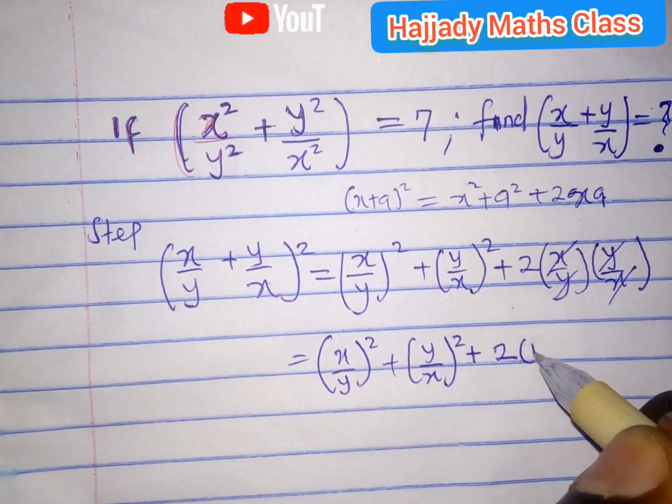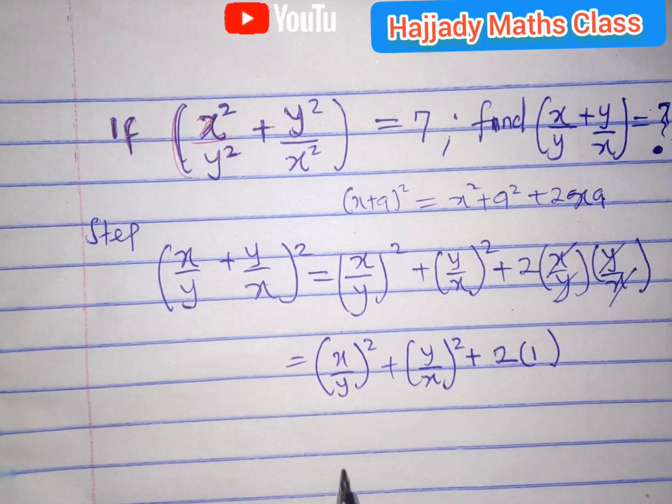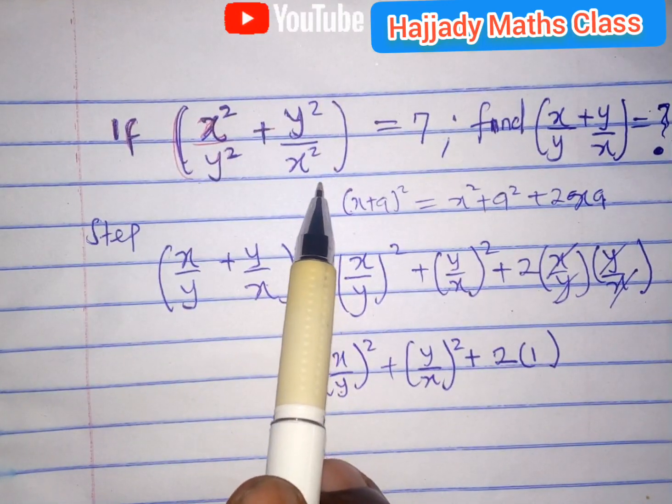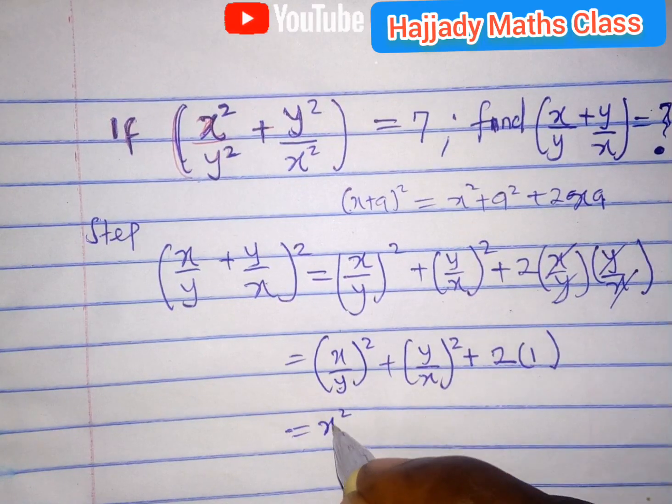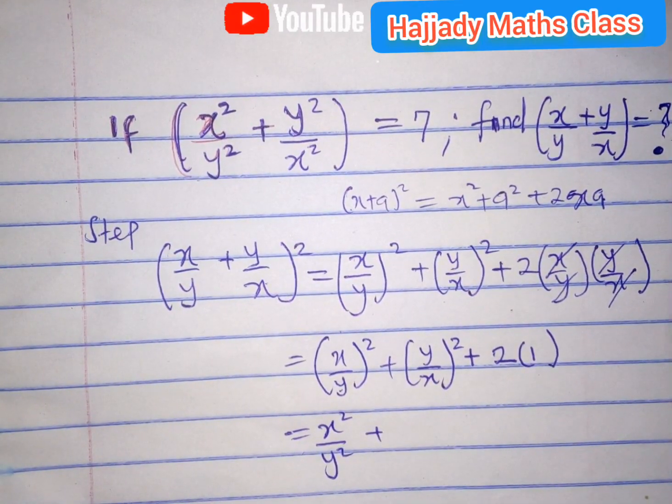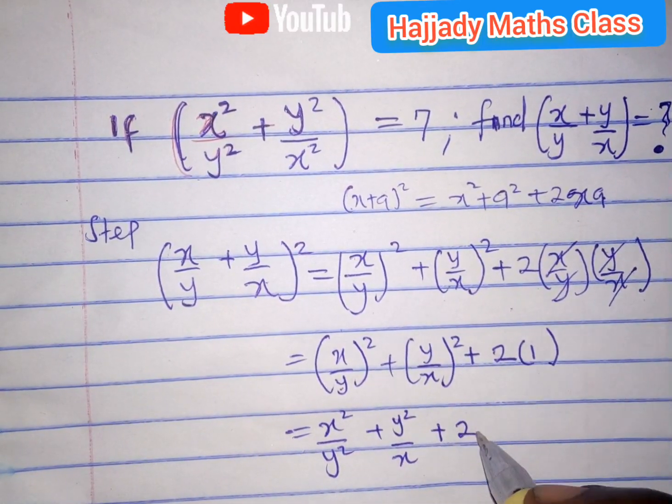And then from the expression, don't forget that this is the same as this. So this can be expressed as x squared over y squared plus y squared over x squared plus 2.